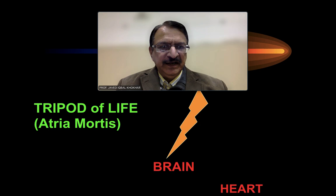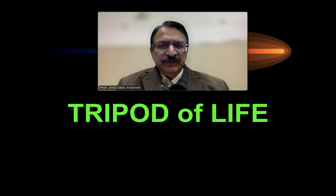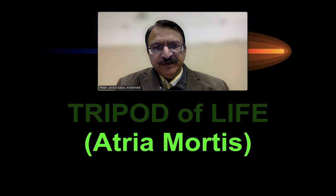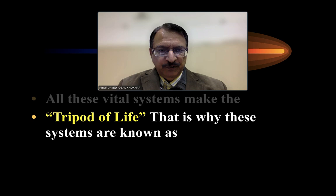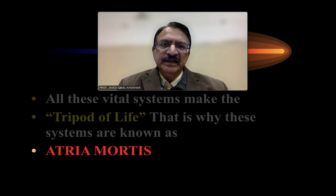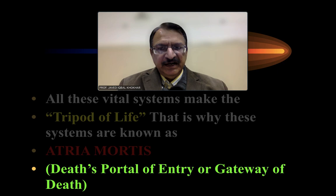The three basic vital systems — the central nervous system (brain), the heart (cardiovascular system), and the lungs (respiratory system) — all together make life. This is the tripod of life, and the loss of function of any leg of the tripod is the gateway of death. These vital functions make the tripod, and non-functioning of these systems is known as atrium mortis — the gateway or portal of entry to death.